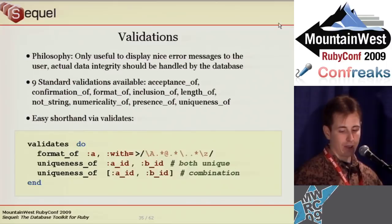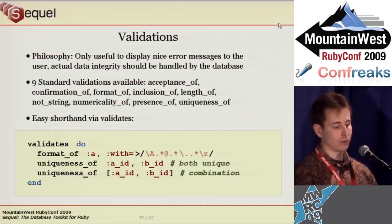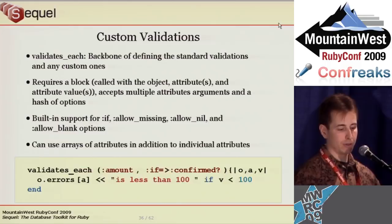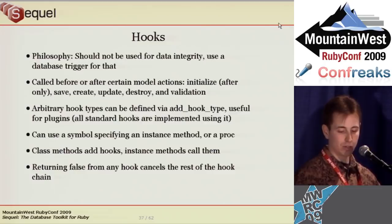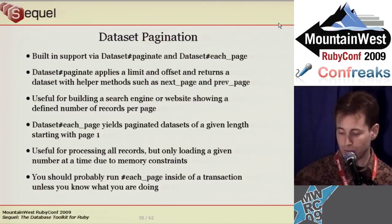Sequel supports validation similar to AR. My philosophy is that validations should only be used for nice error messages, not data integrity — you should use database constraints for data integrity. It supports built-in validations, similar to AR's, as well as ones you write yourself, which can also take options like if. Sequel supports most of the same hooks as AR, with similar usage. I prefer database triggers to hooks if you're doing something that involves data integrity, though if you're targeting multiple databases, using hooks and validations is probably easier.